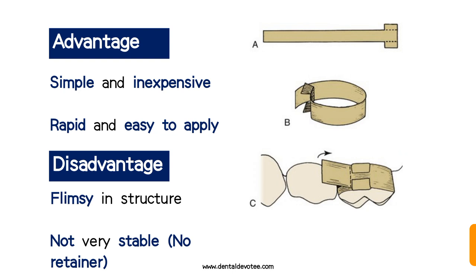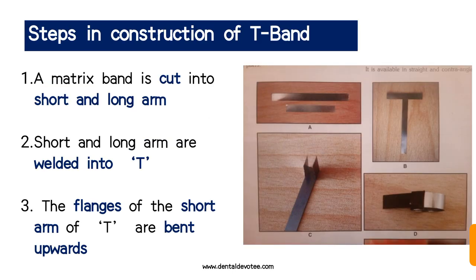Now let's see how we can construct a T-band. First, we need to cut a matrix band into a short arm and a long arm as shown in the figure. Then both these arms are welded into a T-shape. The flanges of the short arm of the T are bent upwards just around the width of the long arm of the T-band.